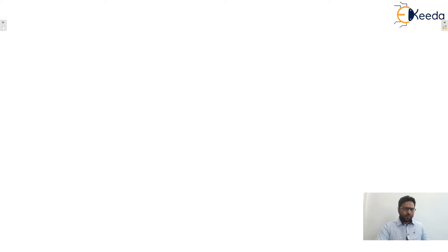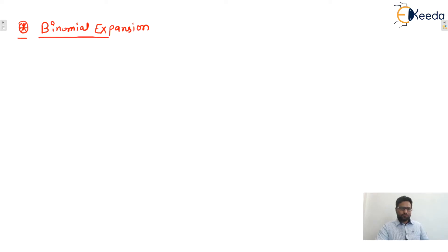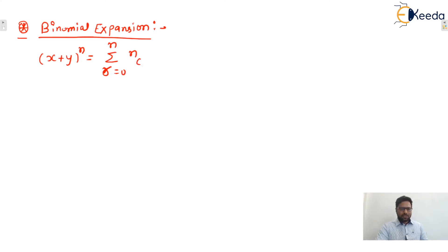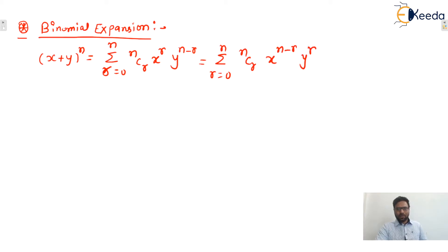First, everybody knows about the binomial expansion. The binomial expansion of (x + y)^n equals the summation from r = 0 to n of nCr · x^r · y^(n−r), which is also equal to the summation from r = 0 to n of nCr · x^(n−r) · y^r.